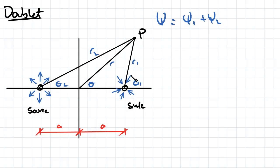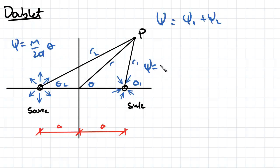What is the streamline of each of these? For a source, the streamline is equal to m over 2π times theta. For a sink, the streamline is equal to minus m over 2π times theta. At this point we're going to denote this theta 2, and it's going to be theta 1 here. Notice that when we get to point P, we're actually pointing at different angles.